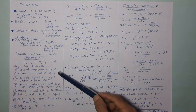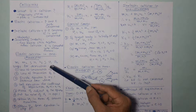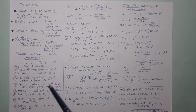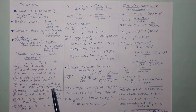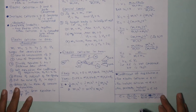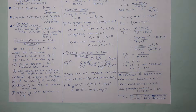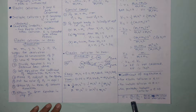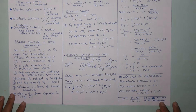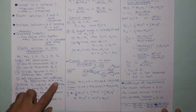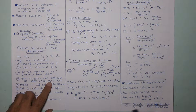Divide equation 2 by equation 1, and you will get V2 minus V1 equals U1 minus U2. This is the equation for the coefficient of restitution, denoted E, defined as (V2 − V1) / (U1 − U2) — the ratio of relative velocity after collision to relative velocity before collision. For elastic collision, E equals 1.